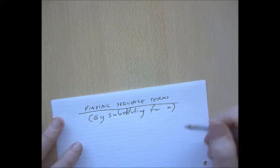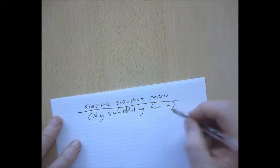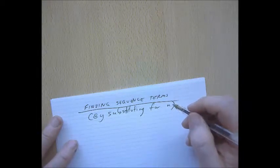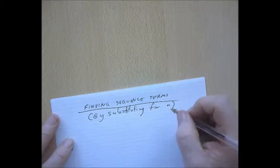This video explains how to find sequence terms by substituting for n. I'll just explain why this number n comes up so much. It's because in maths we like naming things, but there's only 26 letters in the alphabet.